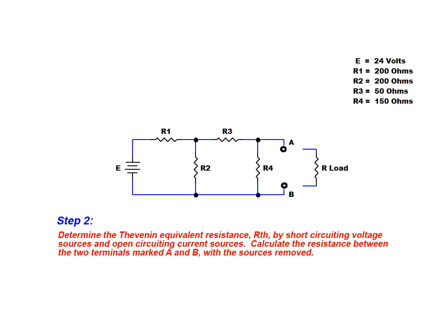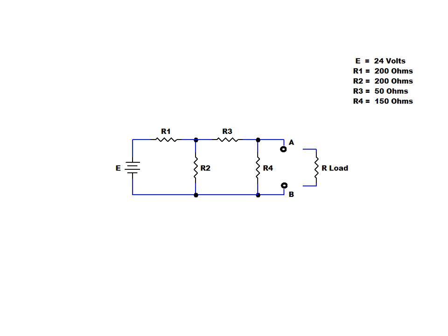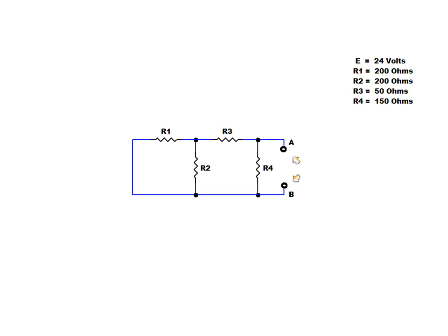The next step in the process is to calculate the Thevenin-equivalent resistance, RTH. We begin step 2 by removing and short-circuiting the single voltage source that is present in this network. We are now ready to calculate the Thevenin-equivalent resistance, RTH, as seen between points A and B in the circuit. To do this, we reduce the remaining resistive network down to a single equivalent resistance.